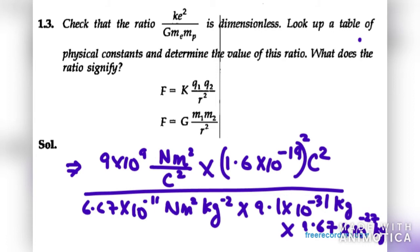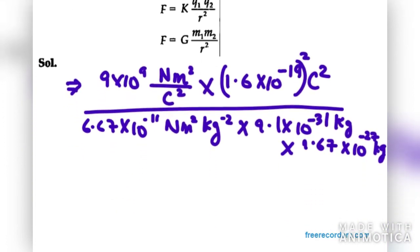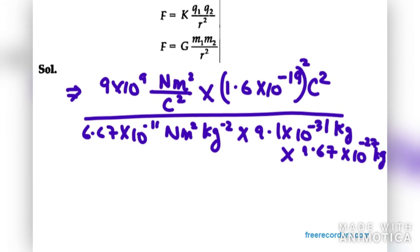So let's solve this further. Let's cut out the values which we can. So it is Newton, Newton. Then it is meter square, meter square. Then we have coulomb square, coulomb square. Then we have kg with kg. So as you can see, it is dimensionless because we don't have any quantity here now.